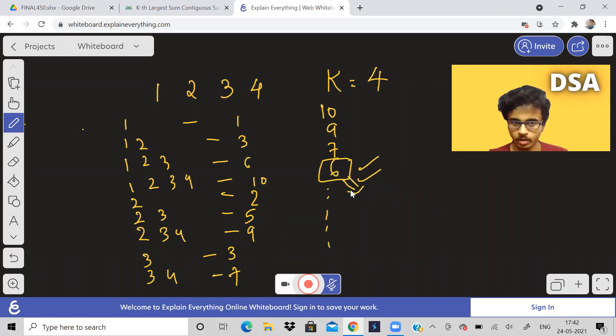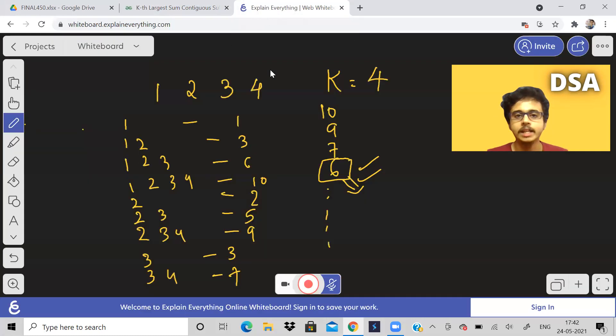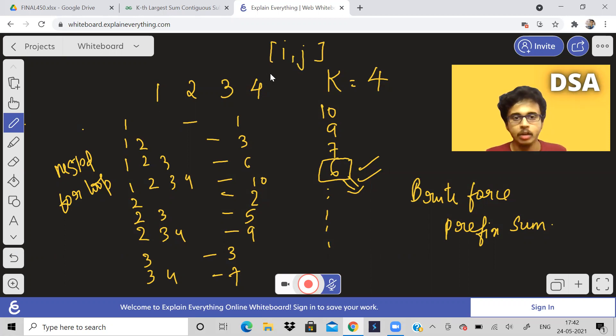In order to solve this problem, this article is about min heap and basically they are using brute force method. They are calculating the prefix sum of the array and then using a nested for loop, they are calculating the sum of the subarray i comma j.